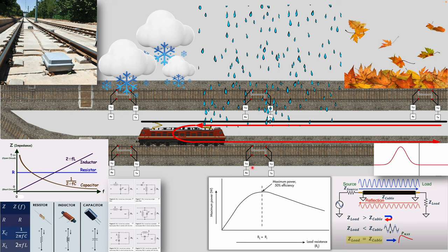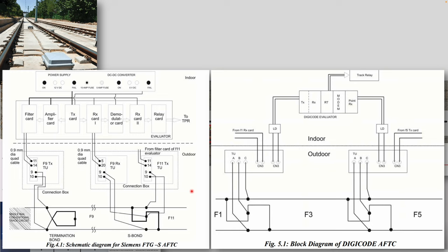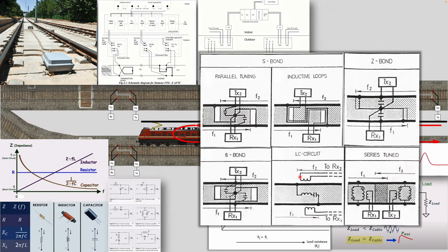These are some real block diagrams of real track circuits — the source will be in the description below. You can pause and try to understand them, but we won't go into detail in this video. Also, the Z-bond arrangement shown is only one way of achieving this. In reality, there are many different ways — some vendors call it an S-bond, an 8-bond, or an LC circuit. Different ways of achieving electrical separation using RLC circuits exist, but the principle is the same.